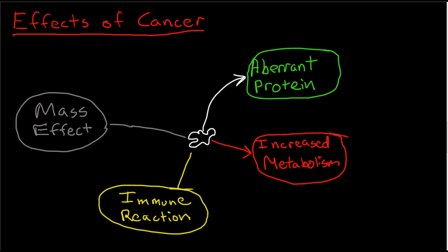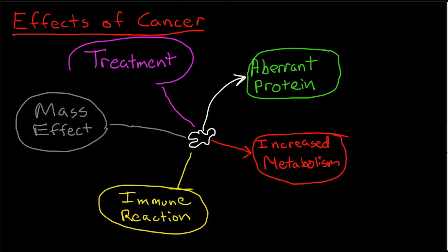The fifth would be the effects of treatment itself. Chemotherapy in particular is a very blunt instrument, and it tends to affect healthy cells nearly as much as it affects cancer cells. So the effects of cancer are due to these five factors, and we're going to talk a little bit about each of these.